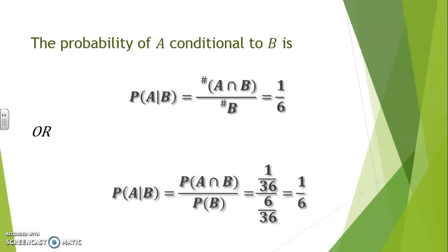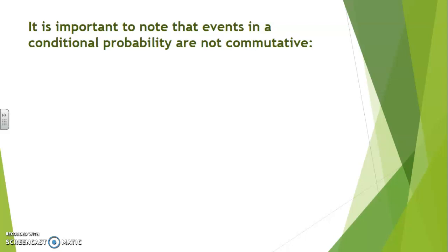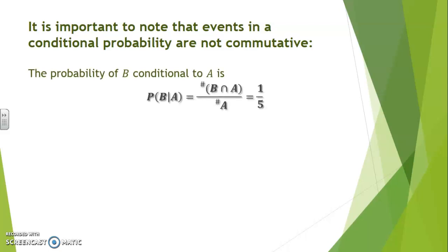The probability of A conditional to B is the number of ways A and B occur simultaneously, which is 1, divided by the cardinality of B, which is 6. In other words, if we know that the dice revealed the same numbers, then there is a 1 out of 6 chance that they will also add up to 6. Likewise, we could find P of A knowing B by the ratio of probabilities: 1/36 over 6/36, giving the same 1 out of 6 probability. It's important to note that events in a conditional probability are not commutative. So P of B conditional to A is 1 divided by the cardinality of A, which is 5, giving 1 out of 5.